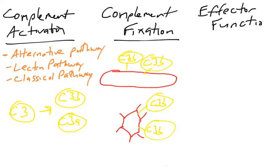What does complement do when it's fixed to a pathogen? So these are the effector functions. And there are three main effector functions for complement, regardless of which pathway started it. Once the complement is fixed to the pathogen, C3Bs are attached to the pathogen, three things can occur.